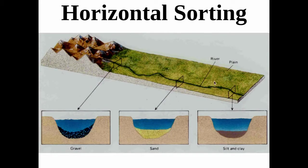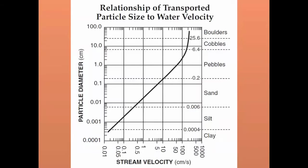You get horizontal sorting in the stream, and then even more horizontal sorting as the stream enters the large body of water. Page six shows the relationship between transported particle size and water velocity — as the river velocity decreases, the particle size it can carry gets smaller and smaller, essentially showing that water sorts sediments.